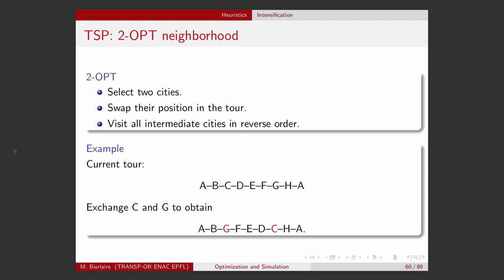Let's now consider the traveling salesman problem and give an example of a neighborhood. One very popular neighborhood structure used for this problem is called 2-opt. We have a tour, which is the current order of the cities to be visited. We select two cities among them, swap their positions in the tour, and all intermediate cities are visited in reverse order.